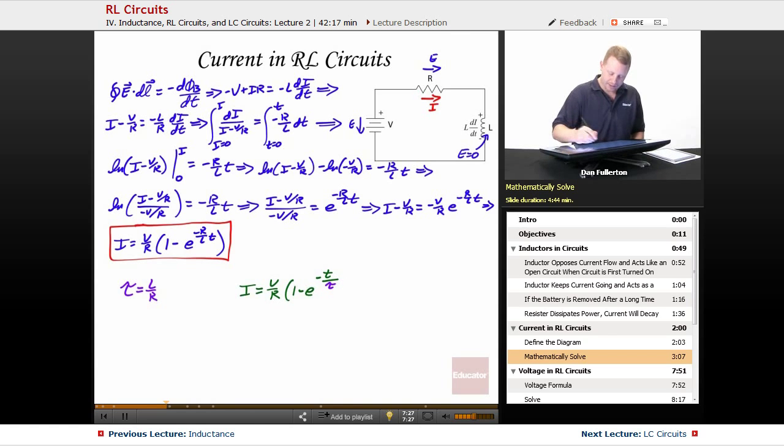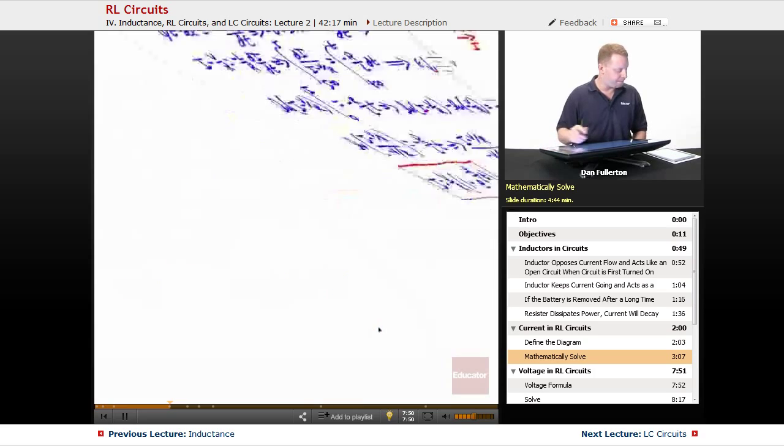So it fits that same basic form of the solution that we saw previously when we were dealing with RC circuits. Once again though we're dealing with something 1 minus E to the minus T over the time constant or E times minus E raised to the minus T over the time constant. You're going to see that form again and again and again. So there's the current, let's take a look at the voltage.